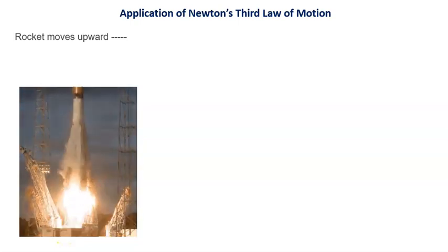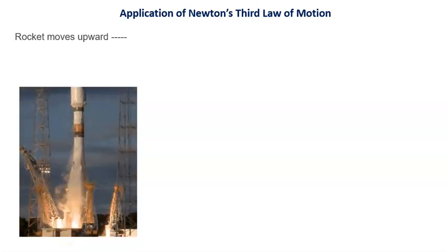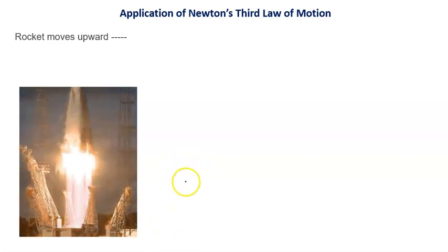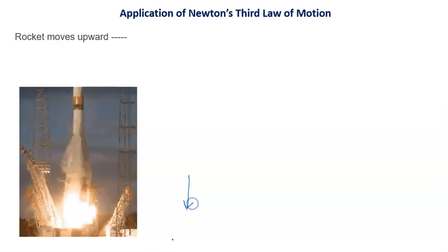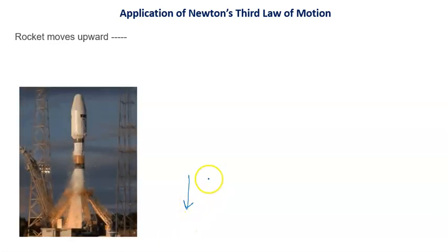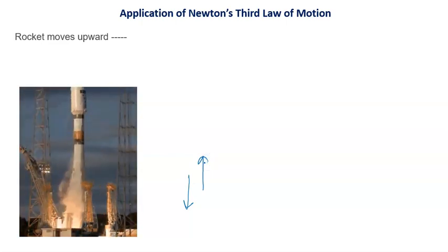Application of Newton's third law of motion: rocket moves upward. As we start the rocket engine, gases are expelled at high force in the downward direction, which represents the action. As a result, an equal and opposite reaction acts on the rocket and the rocket moves in the upward direction.